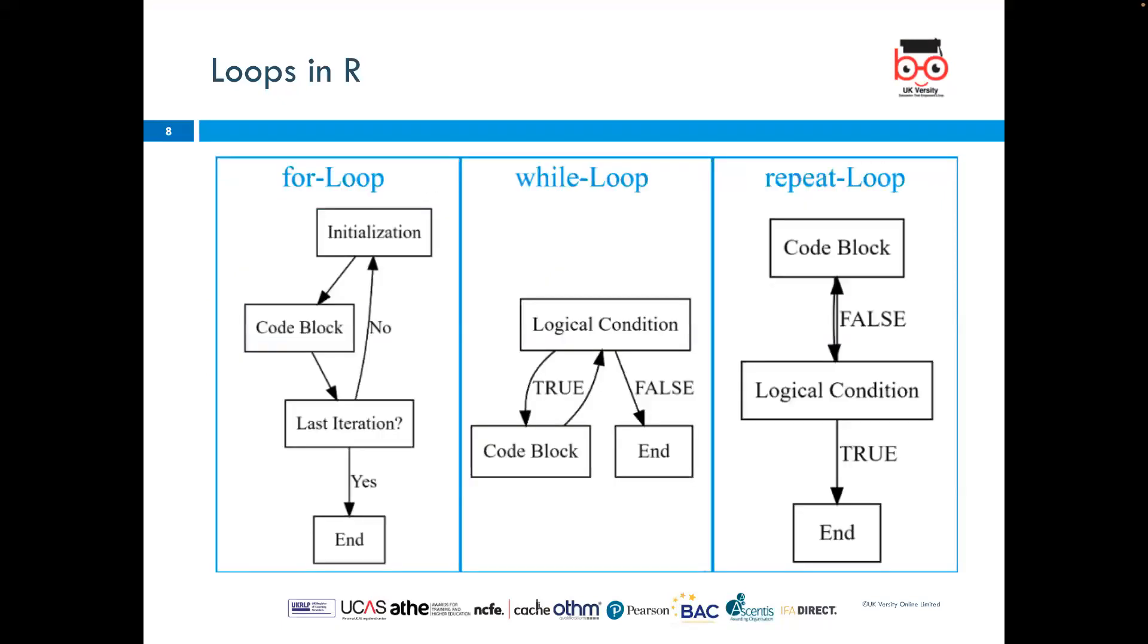In the for loop, this is the flowchart showing the differences between the three. In the for loop, we have the initialization, it goes to the code block, and then the last iteration. If yes, it goes to end.